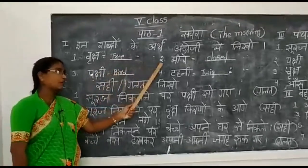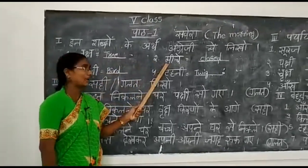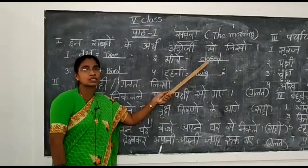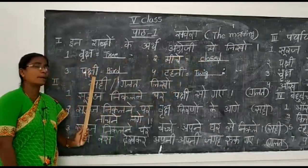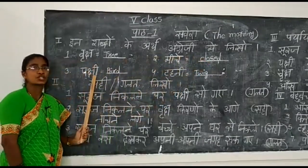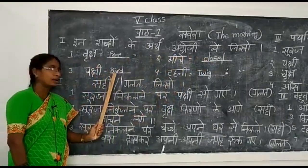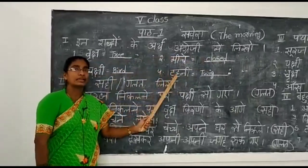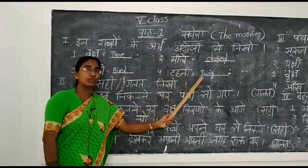Second word is 'miche', meaning closed. Third word is 'pakshi', meaning bird. The fourth word is 'tahane', meaning twig.